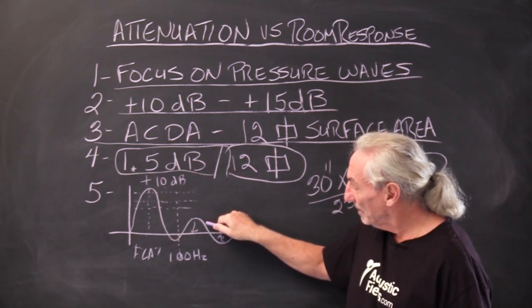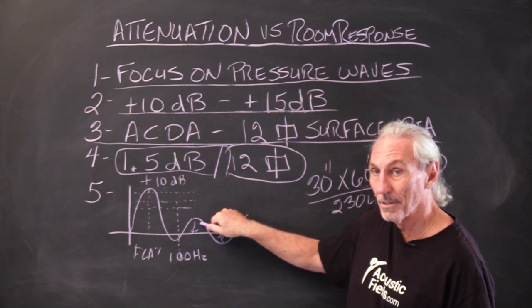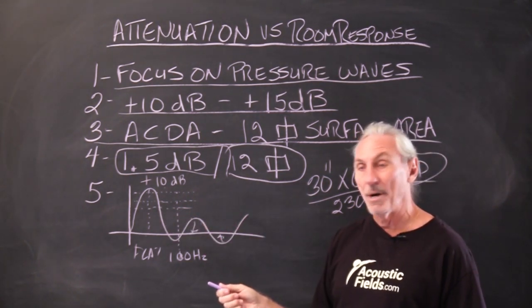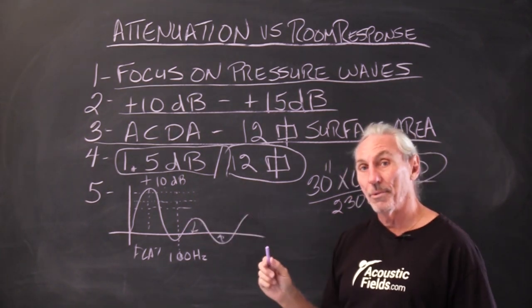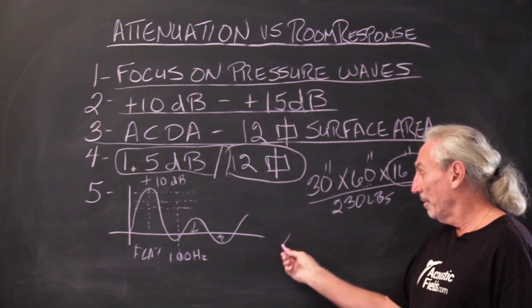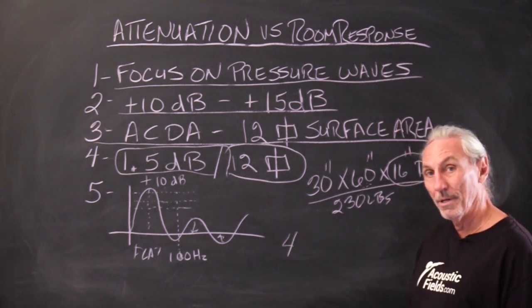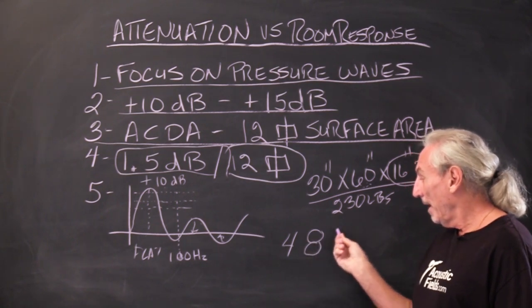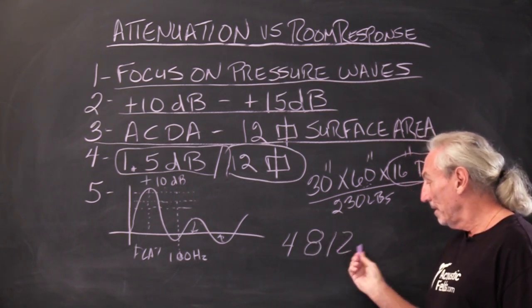And in the middle frequencies, it only takes maybe a couple units. But in our low end, which is always the biggest peak in the response curve, we got to have multiple units. What we found over the years is that most rooms require a minimum of 4. 8 is more on the average. And if you're really serious, 12.